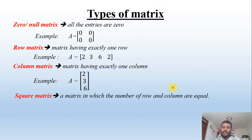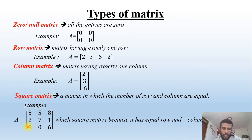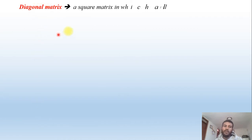The next type is a square matrix: a matrix in which the number of rows and columns are equal. For example, matrix A = [5, 5, 8; 2, 7, 1; 8, 0, 6] has equal numbers of rows and columns, so it is called a square matrix.